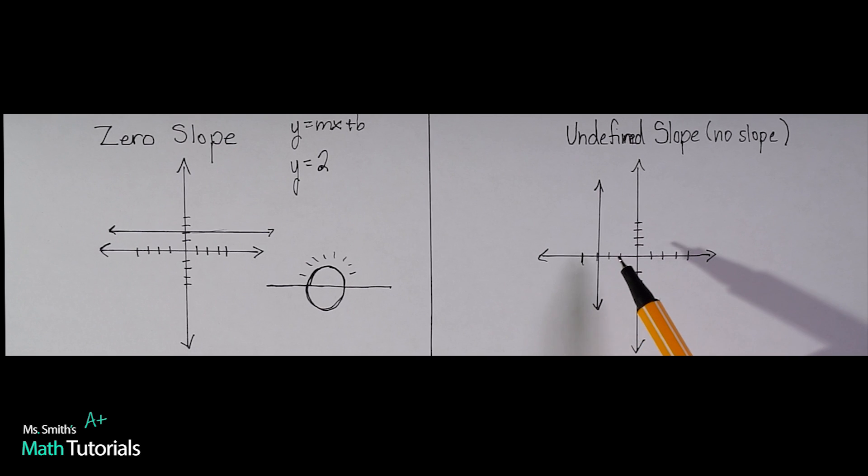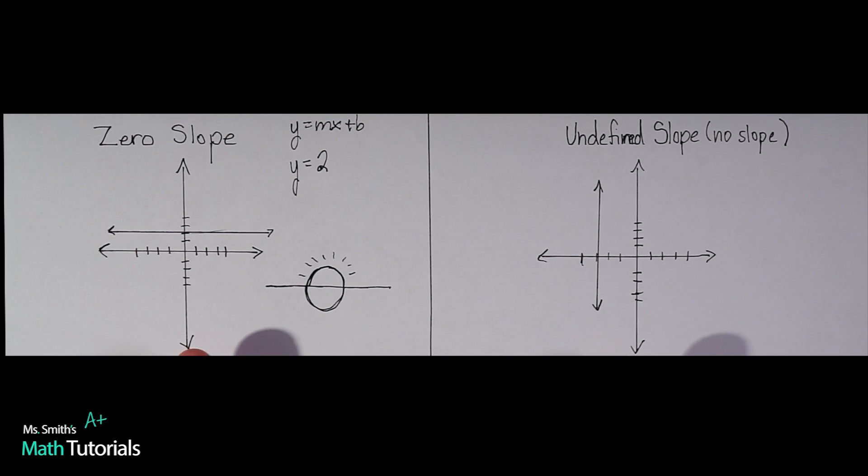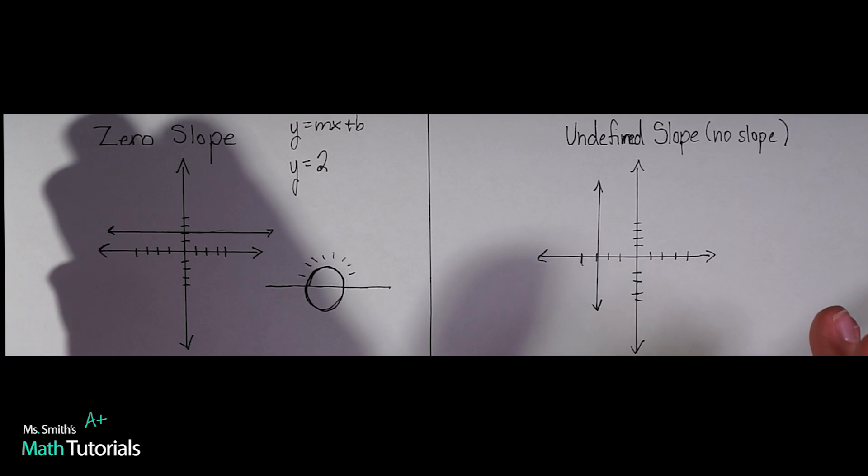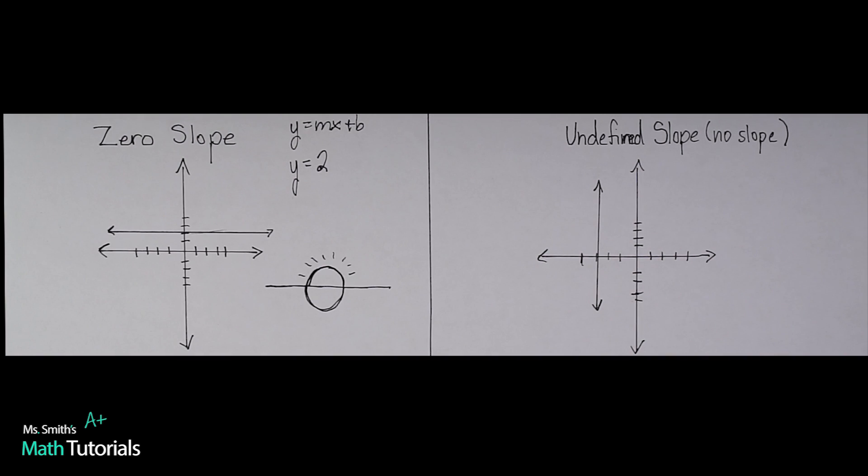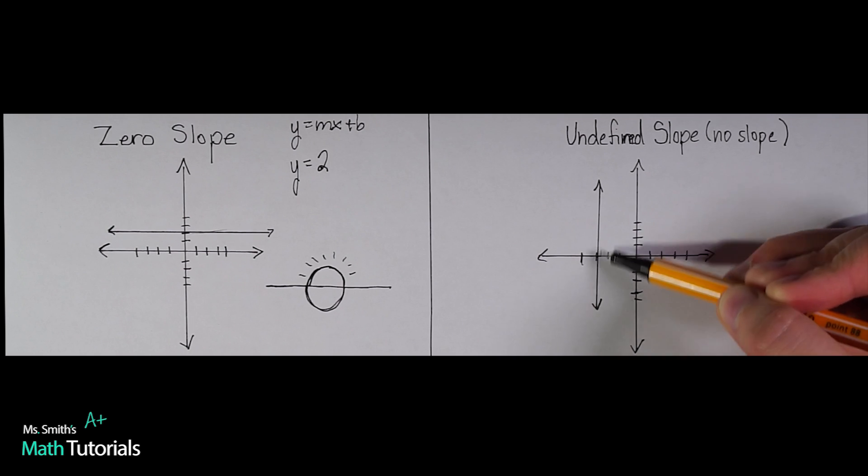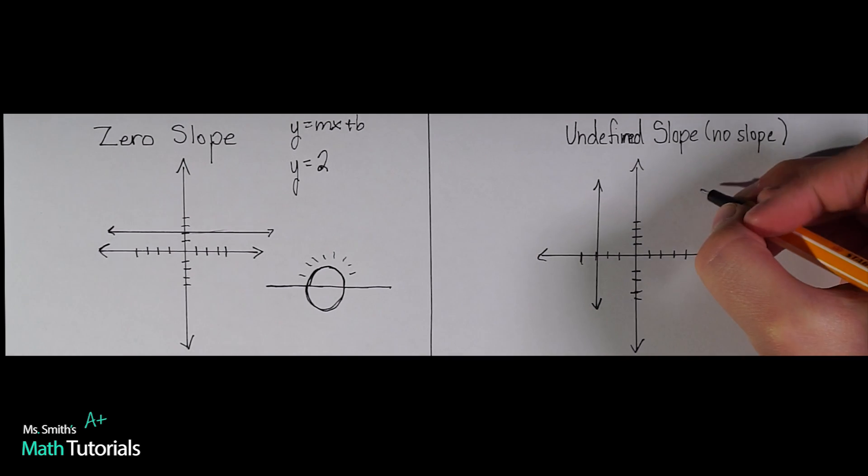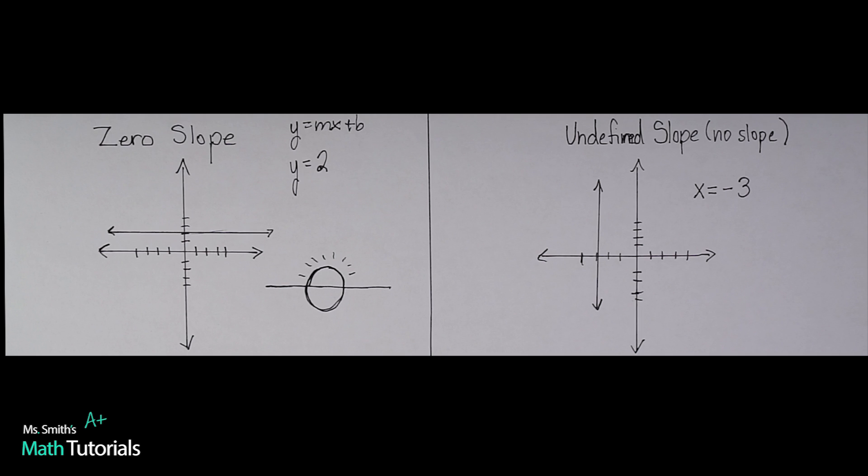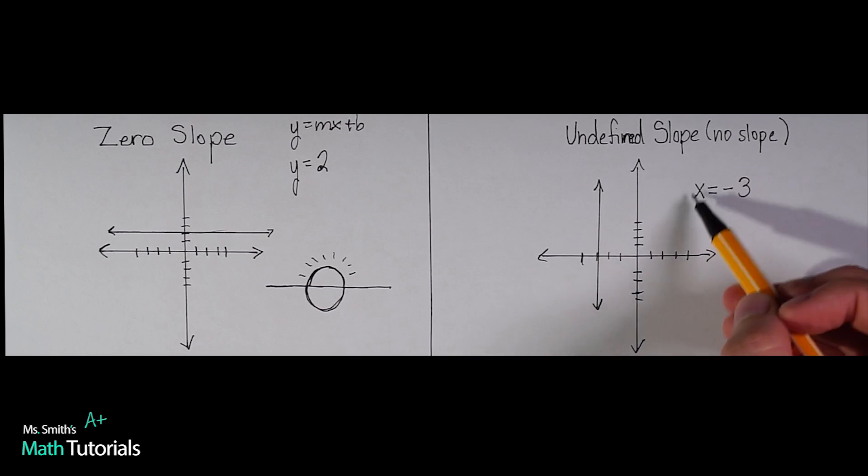For this one, undefined slope, another way to say it is no slope. So a lot of students get these two confused because they think, okay, zero slope means there's no slope. But these are totally separate. They're totally different. Okay, so don't try not to get them confused. Undefined is the same thing as no slope. So this would be a vertical line. So an equation for this would be x equals negative 3. Okay, doesn't even matter that it is negative. In this case, it's a vertical line. It doesn't even touch the y axis. This is how this equation would look.